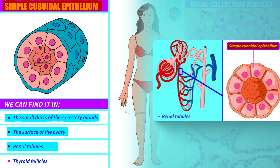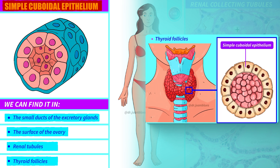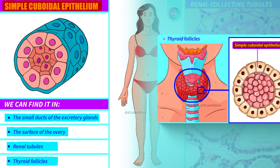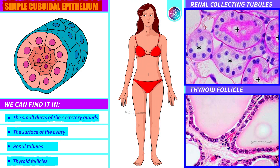We also find cuboidal simple epithelia in the thyroid follicles. The thyroid follicles are lined on the inside by a simple layer of cube-shaped cells — cuboidal simple epithelia. Here I have prepared two histological sections, one of the renal tubules and another of the thyroid follicles, and this is what they look like under a microscope: a single layer of cells shaped like cubes.